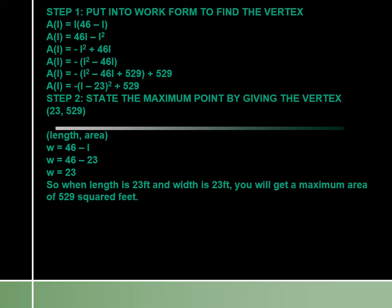Step two: state the maximum point by giving the vertex. Our vertex is (23, 529). Remember that 23 is our length. To find width, we let width equal 46 minus L, so we substitute 23 for L: width equals 46 minus 23, which is 23. So when length is 23 and width is 23, we get a maximum area of 529 square feet.